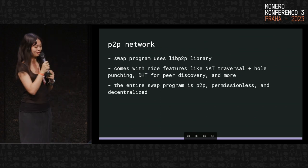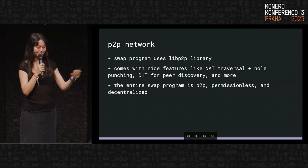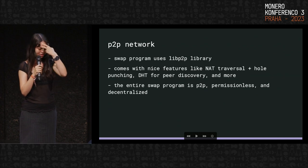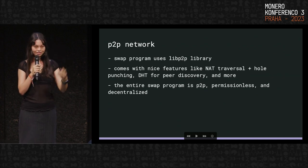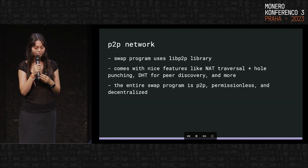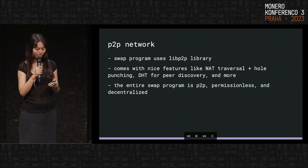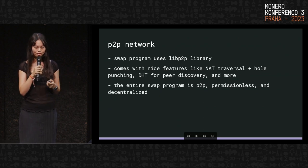A little bit about the P2P network: the program uses a library called libP2P, which is a peer-to-peer library. It comes with a bunch of nice features already built in — NAT traversal if you're behind a NAT, and a DHT for peer discovery. It's entirely P2P, permissionless, and decentralized. You can just run a node and join, and offer discovery is also entirely P2P and decentralized.